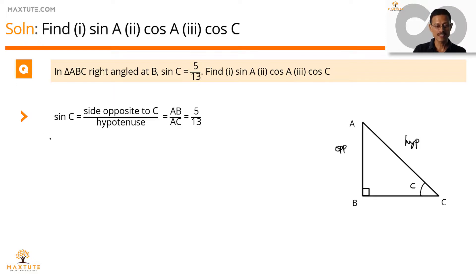So what we'll do is let's say if this ratio is 5 by 13. So if AB equals 5k then we can conclude that AC is equal to 13k.